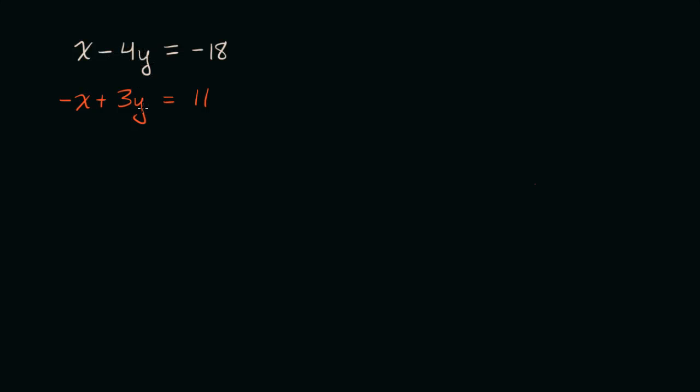So we have a system of two linear equations here. This first equation, x minus 4y is equal to negative 18, and the second equation, negative x plus 3y is equal to 11.